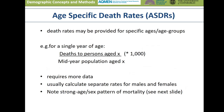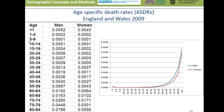An alternative is to calculate age-specific death rates. Here we're looking at the deaths to a person at a particular age divided by the mid-year population at that age, again usually multiplied by a thousand. The challenge here is that we require more data, which we might not have in some contexts. We usually calculate separate rates for males and females, and this allows us to capture the strong age and sex pattern in mortality, as shown here in this graph of age-specific death rates for England and Wales in 2009.